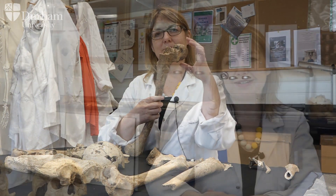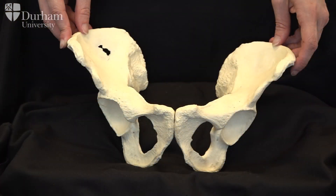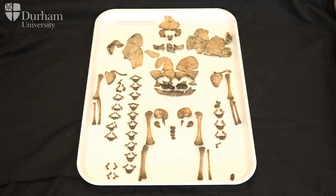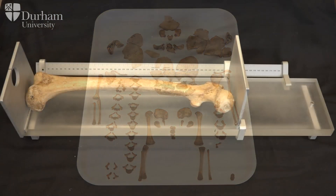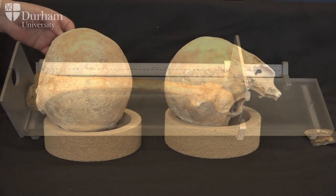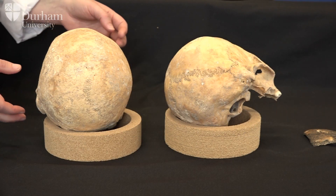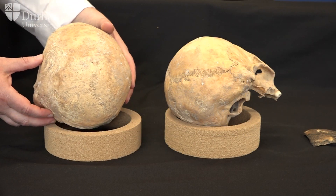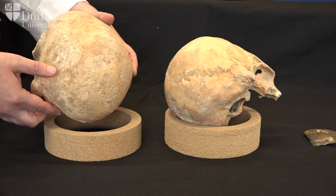During the course of this series we'll be looking at how to determine sex from skeletal remains, how to estimate age at death from infant and juvenile remains as well as adult skeletal remains, how to estimate stature, and we'll also be taking a look at some of the pathological lesions that we can see on skeletal remains and how to diagnose and record different pathologies.